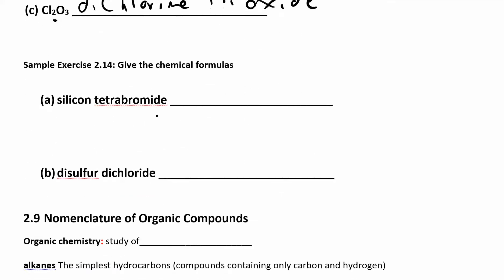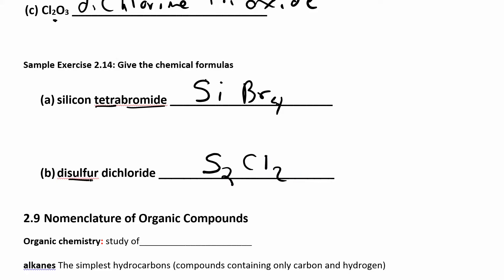You also need to go the other way — from names to formulas. Silicon tetrabromide: silicon is Si, tetra means four bromides, so SiBr4. Disulfur dichloride: two sulfurs and two chlorides, so S2Cl2. Remember, the first element name is unchanged, but the second one gets the -ide ending.